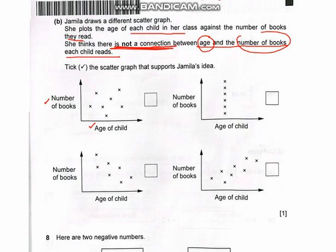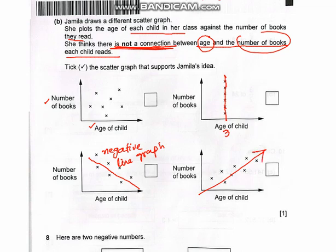Let's look at the second one also — age of the child and the number of books. There is a link because it gives a horizontal line; as age increases from 3, 4 or 5, the number of books is increasing. The third one has a negative line crossing between them, so there is also a link. The last one is positive, so there is also a link. Only the first one is not showing any relationship between the number of books and the age of the child, so it is the answer.